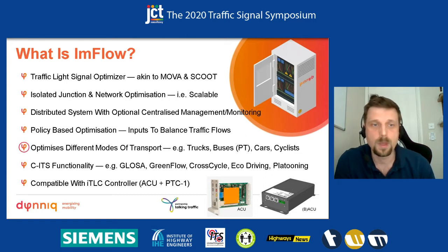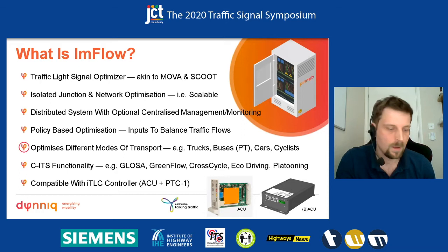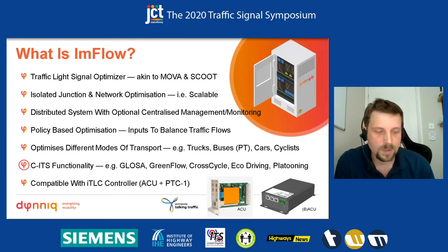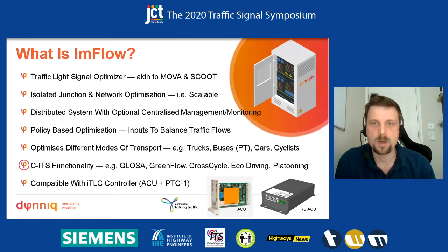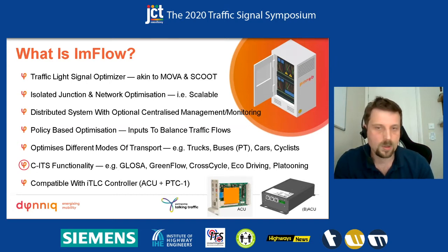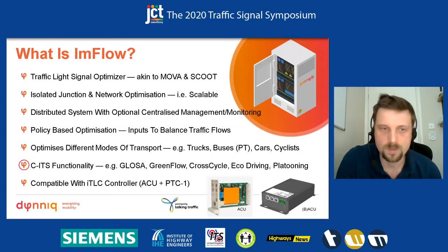Inflow allows for different optimisation of different traffic modalities - trucks, buses, public transport, emergency services, etc. CITS is baked in from the start. So capabilities like Glossa - many of you would have heard of or been involved in providing time to green, time to red or speed advice via mobile app or some kind of in-vehicle information service. Also Greenflow, which is a unique product name for truck or fleet priority. And CrossCycle, which is the equivalent for cycle crossings. There's also eco-driving and platooning, which unfortunately I'm not going to have time to talk about.